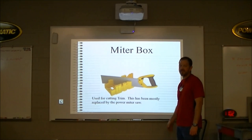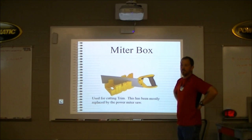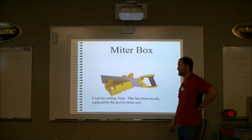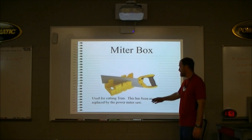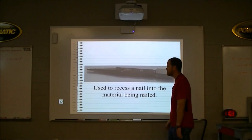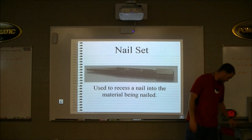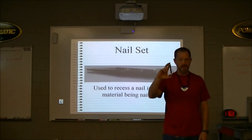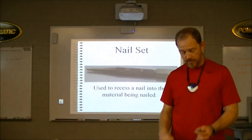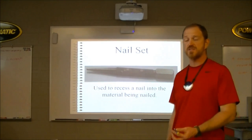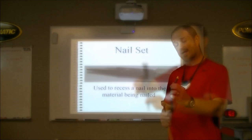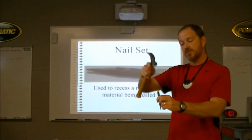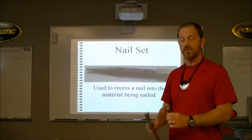A miter box is not used very commonly anymore since compound miter saws exist, but it's used for cutting trim — you lay your trim in the box and the saw cuts at an angle. A nail set: remember when I mentioned the trim nail needing to be recessed below the surface? You drive the nail down to a point, then use the nail set and tap the nail below the surface of the trim so you can caulk and paint over it.